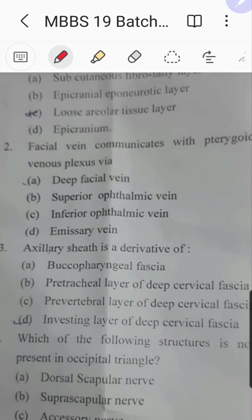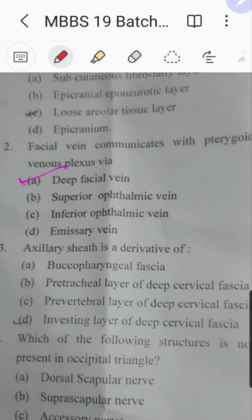Question number two: facial vein communicates with the pterygoid venous plexus via which structure? This is easy — it is through the deep facial vein that the facial vein communicates deep into the pterygoid venous plexus.